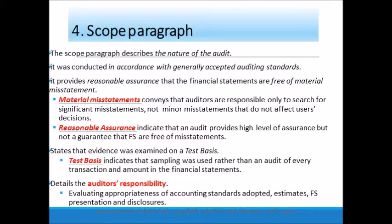It is not the auditor's responsibility to search for minor misstatements that are not likely to affect users' decisions. The term 'reasonable assurance' indicates that an audit cannot eliminate the possibility that material misstatements exist in the financial statements — an audit provides a high level of assurance but is not a guarantee. The remainder of the scope paragraph discusses the audit evidence accumulated and includes the word 'test basis,' indicating that sampling was used rather than examining each single transaction or amount in the financial statements.